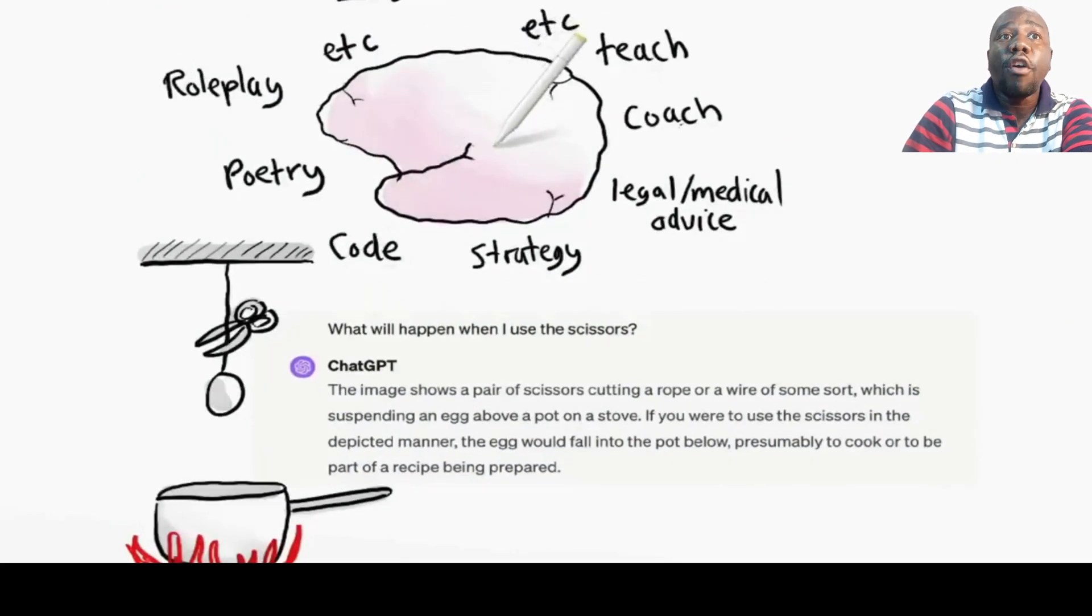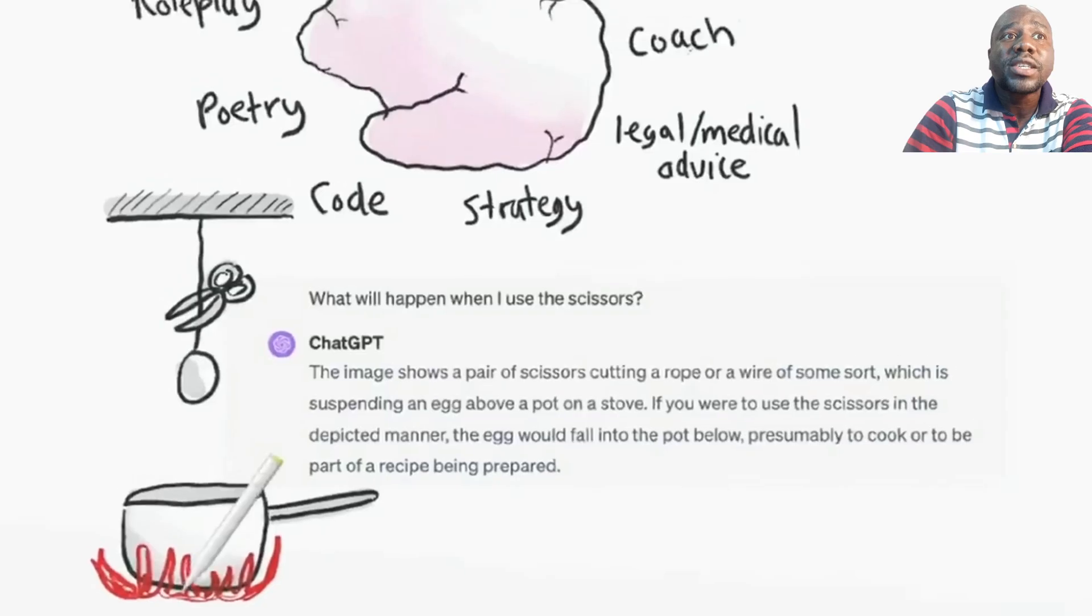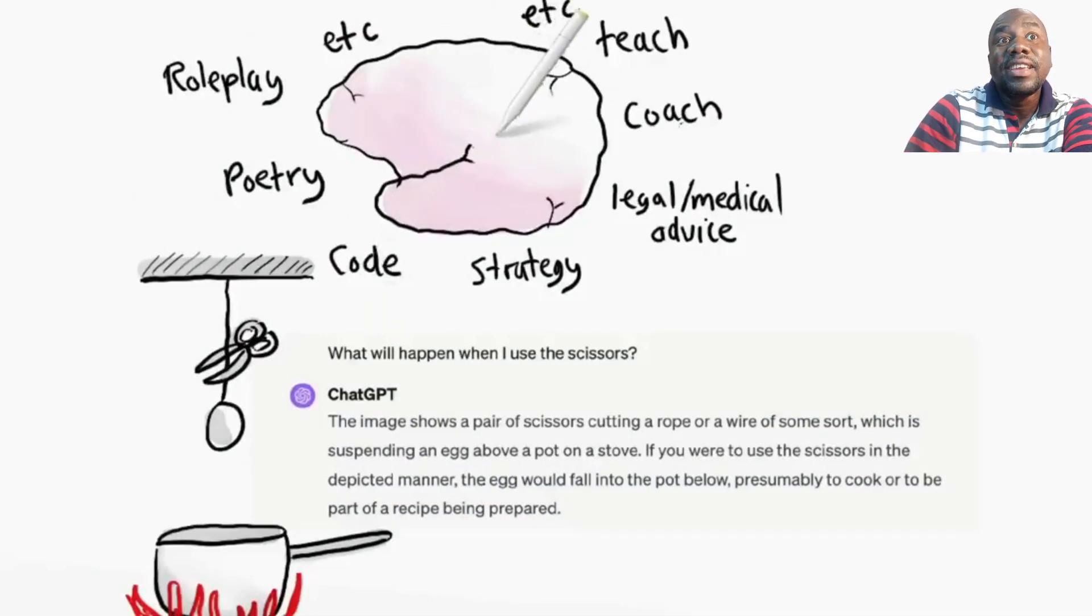Let's take a simple example. I gave ChatGPT this little drawing that involves a string, a pair of scissors, an egg, a pot, and a fire. What will happen if I use the scissors? That's the question. The model has most likely not been trained on this exact scenario. Yet it gave a pretty good answer, which demonstrates a basic understanding of the nature of scissors, egg, gravity, and heat.